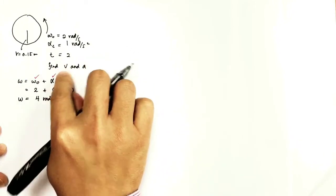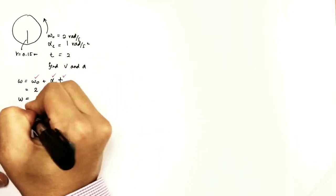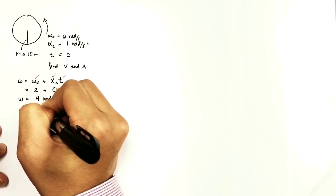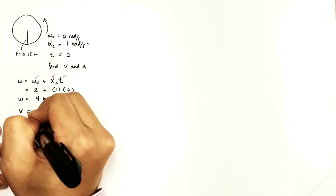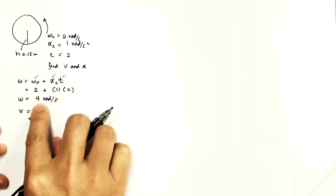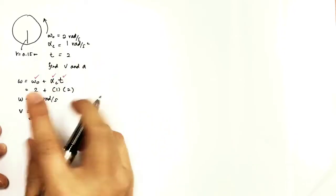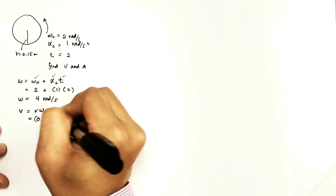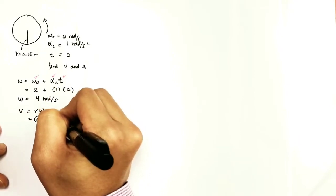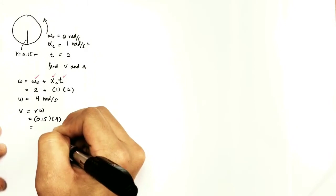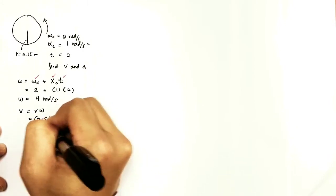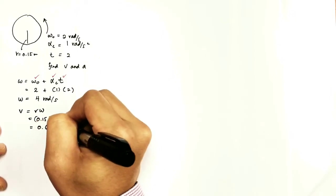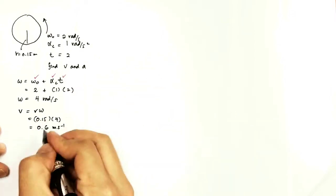It says to find the velocity. Velocity is basically the radius of the circle times the angular velocity. Here we have 4 radian per second, so we have 0.15 times 4. Finally, we are going to get 0.6 meter per second.